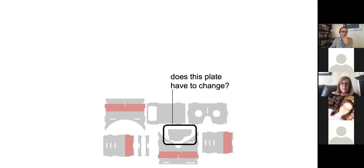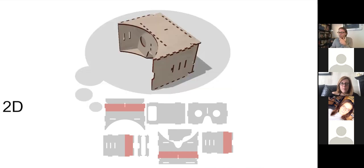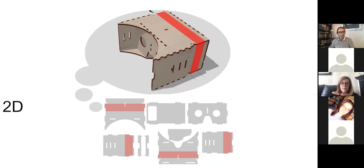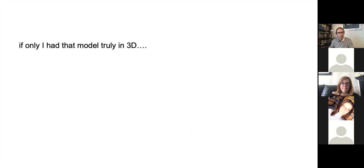In order to solve this problem, what you guys have been doing — and what I did when I did this for the first time — is reconstructing in my mind what a 3D model is supposed to look like, then imagining what the modification looks like, and then figuring out what that means on the individual plates. But what if I just had that model in 3D to begin with? Why do I try to do this from a 2D cutting plan? That takes a lot of imagination.